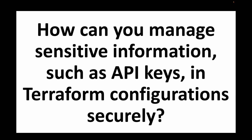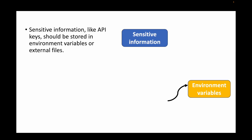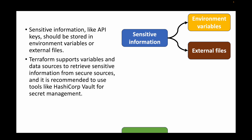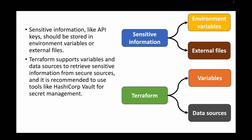The next question is: how can you manage sensitive information such as API keys in Terraform configurations securely? We can use environment variables or maintain sensitive information in external files. Terraform supports variables and data sources which can be used to retrieve sensitive information from secure sources — for example, using AWS Secrets Manager to store passwords and fetching that information via data sources. Terraform also recommends using HashiCorp Vault for secret management.